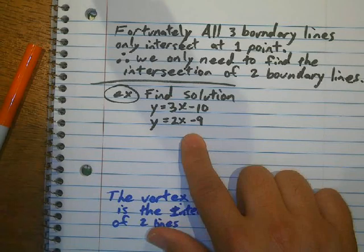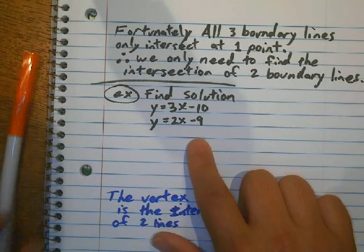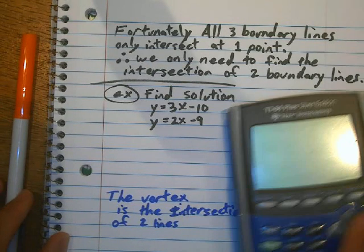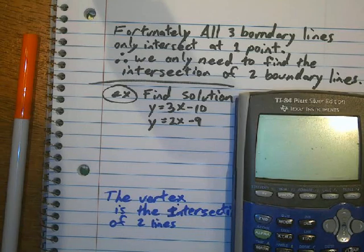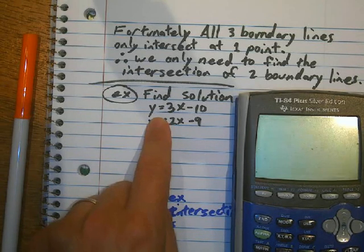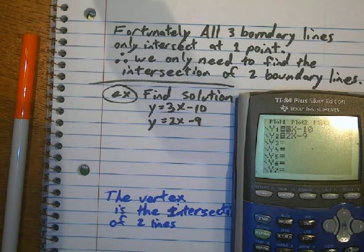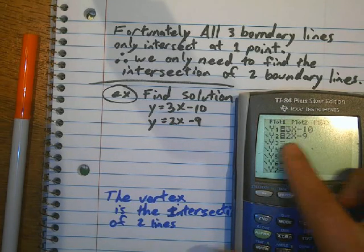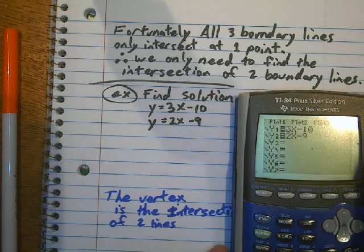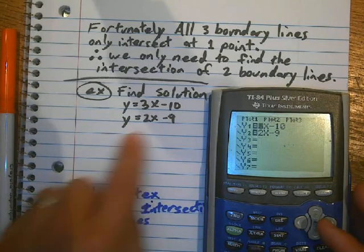Fortunately, on the IB test, they allow you to use the calculator for both parts. So, let's do it with the calculator. So, how do I type an equation? I hit y equals, and then I've typed in the equation 3x minus 10 and 2x minus 9.